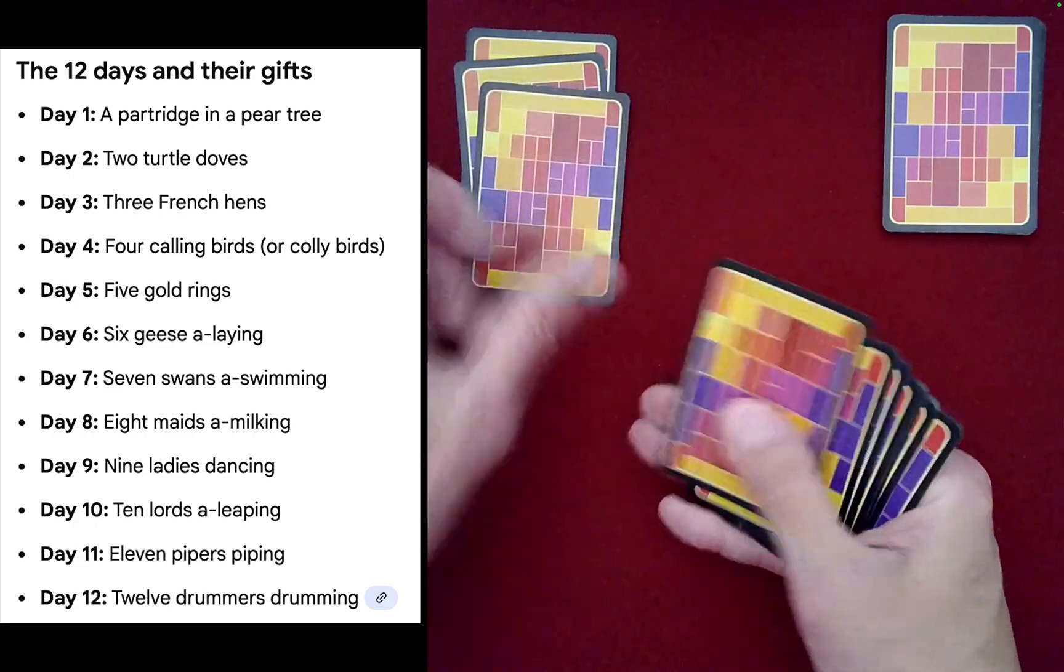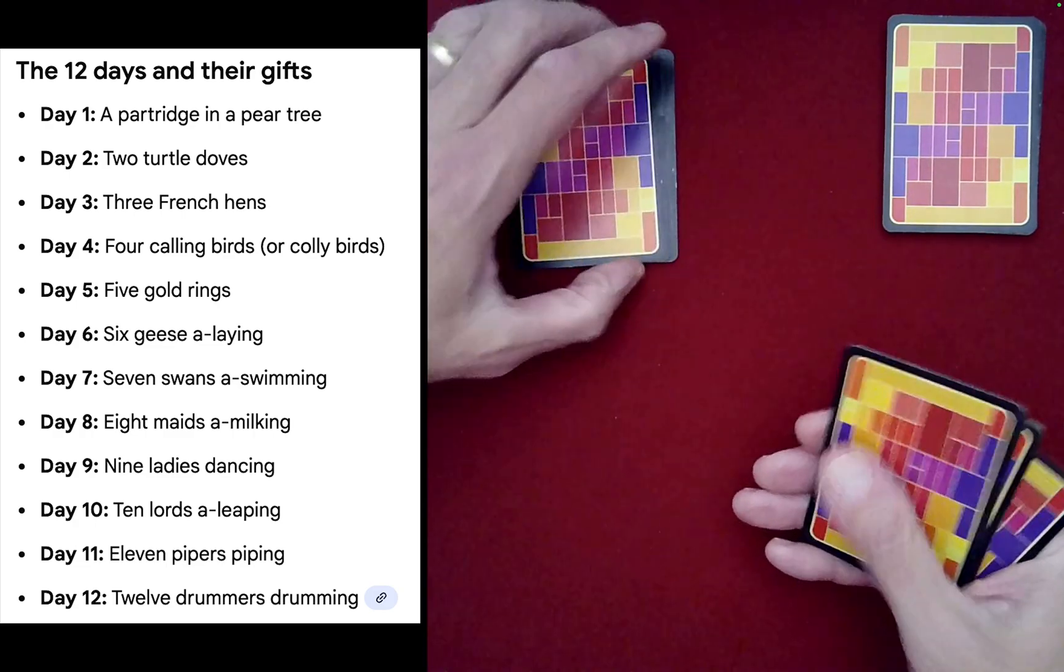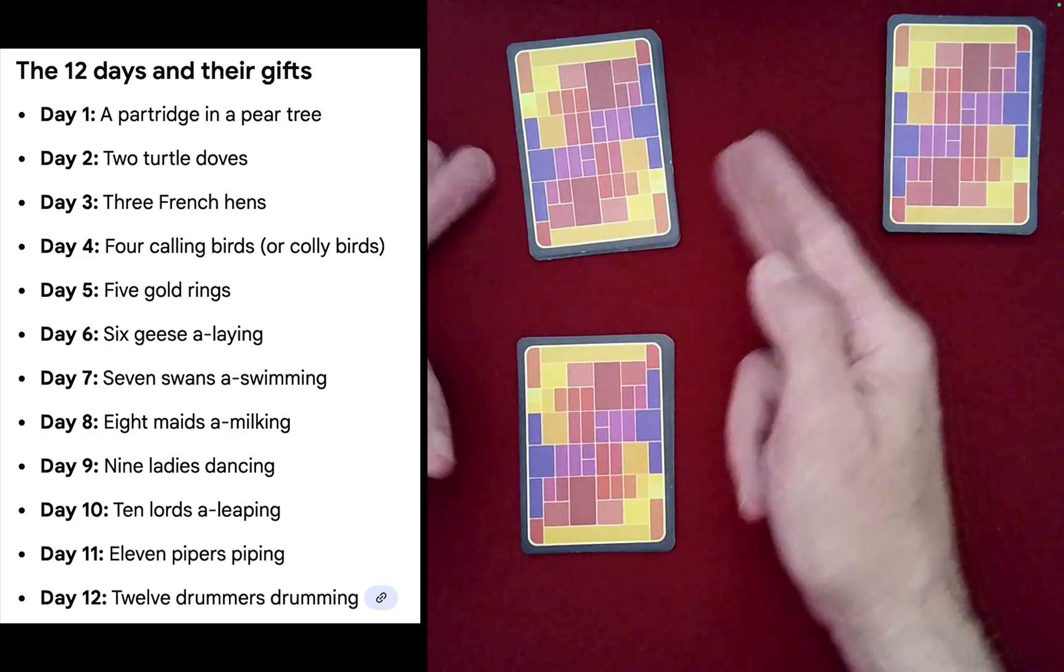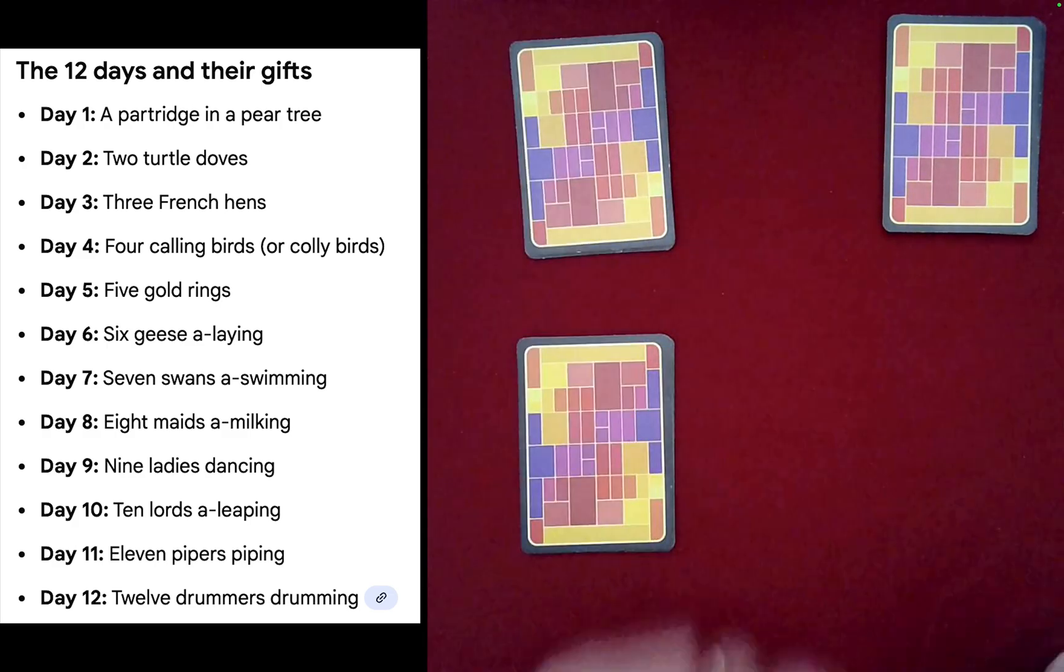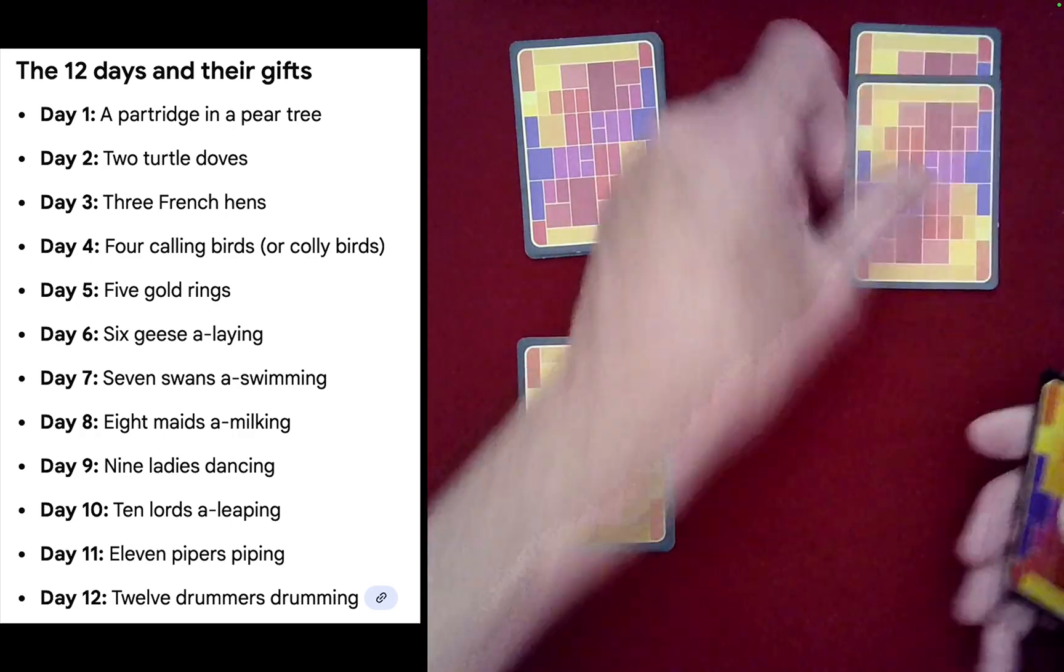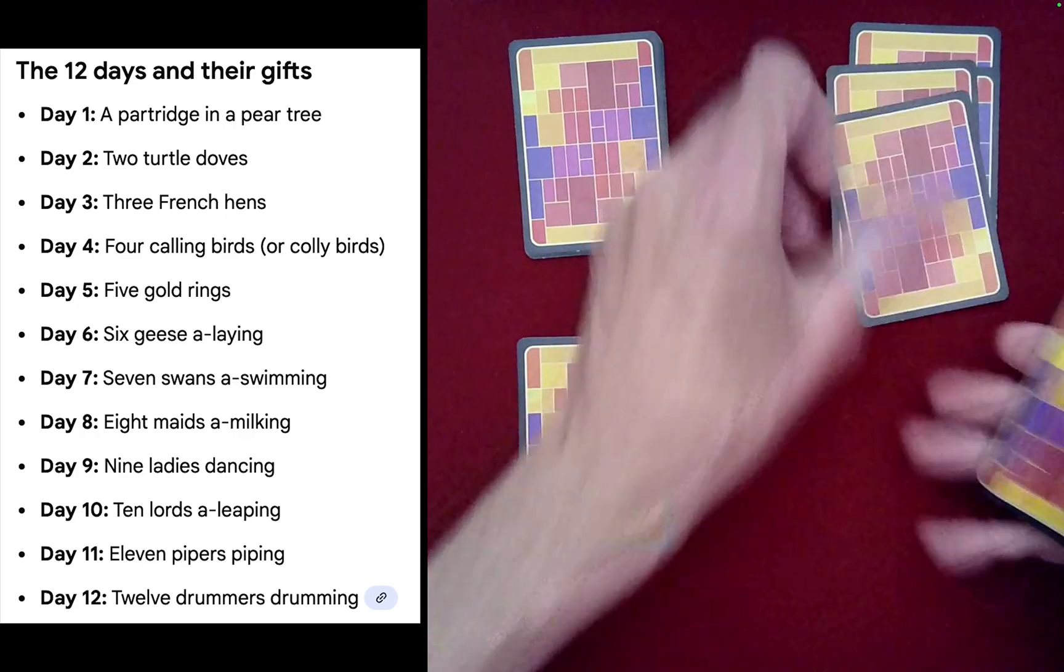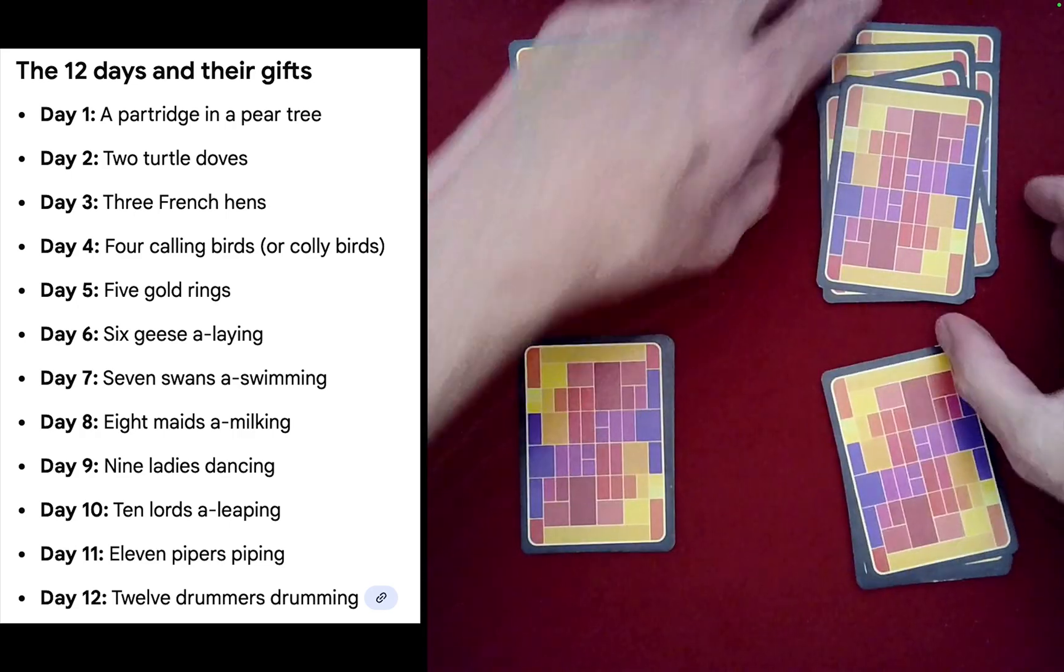For each of them, have spectator A maybe begin, deal off the top, say six cards: three, four, five, six. Very good. Leave the other six as a second pile. These are spectator A's cards. Same thing for spectator B: three, four, five, six. Very good.